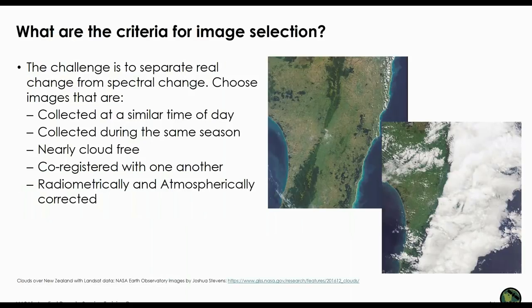The key to successfully detecting change is to separate real change from spectral differences due to other factors, such as images from different seasons. So you need to choose images that are collected at approximately the same time of day, during the same season, nearly cloud-free, co-registered with one another, and radiometrically and atmospherically corrected. I can't stress this point enough — the key to detecting change is to detect the actual change, not spectral differences due to atmospheric differences. This is really the key to identifying change.